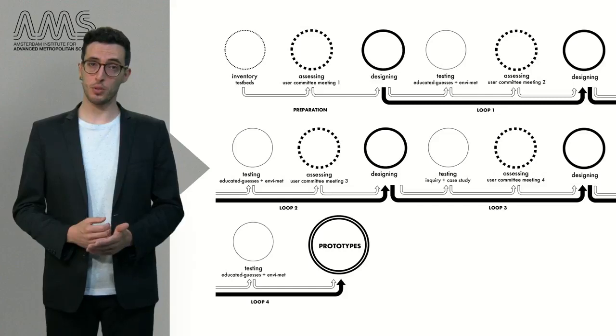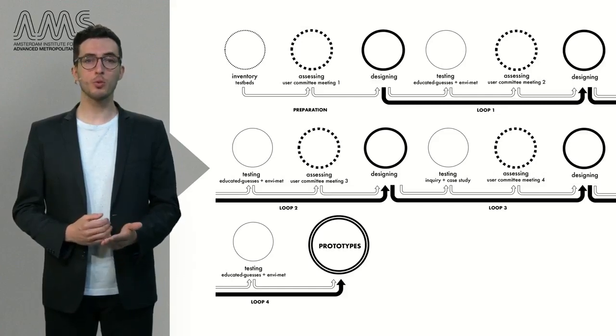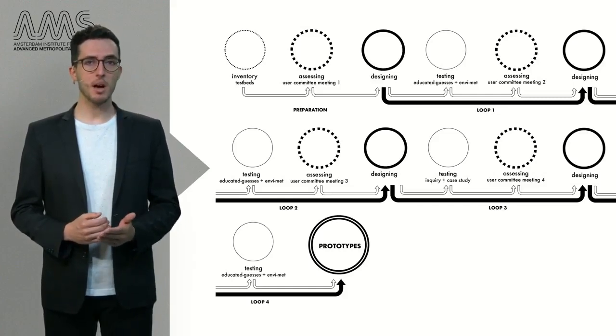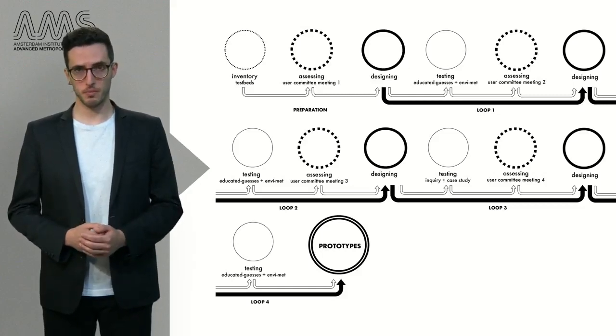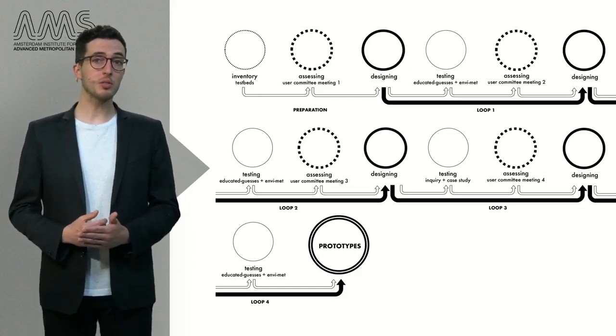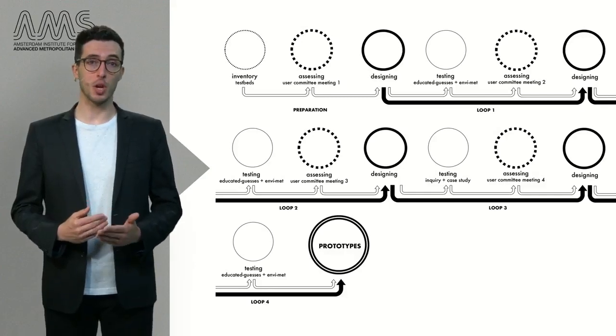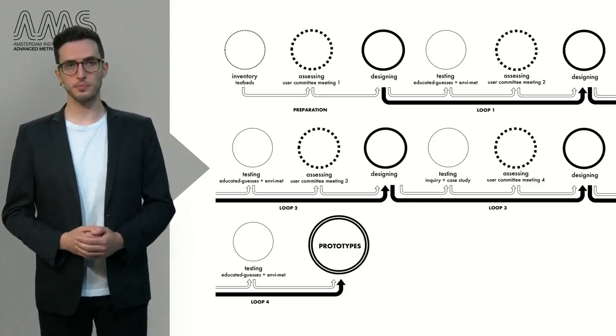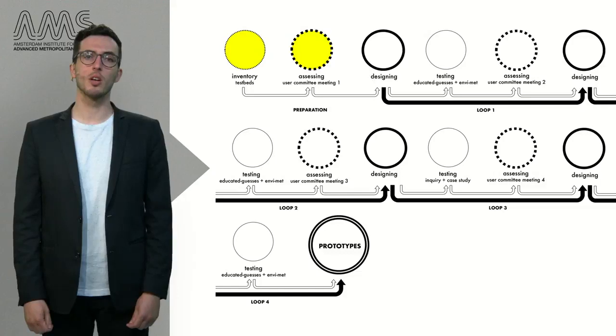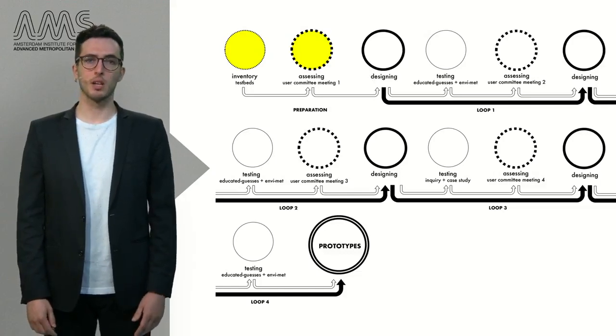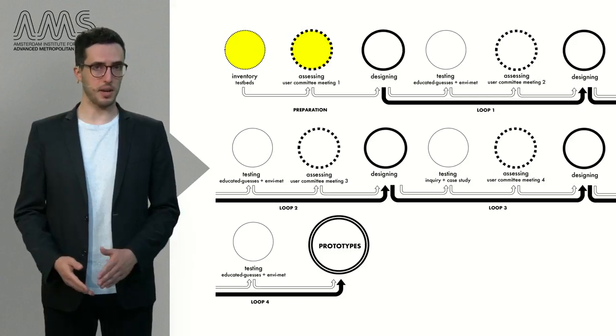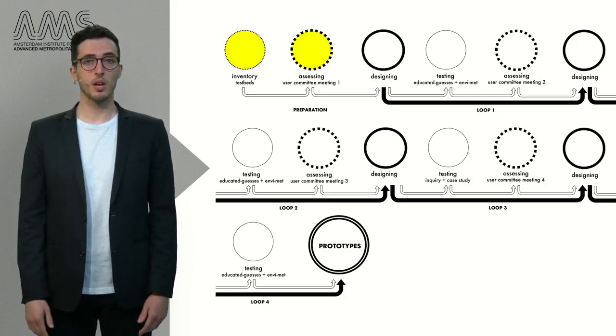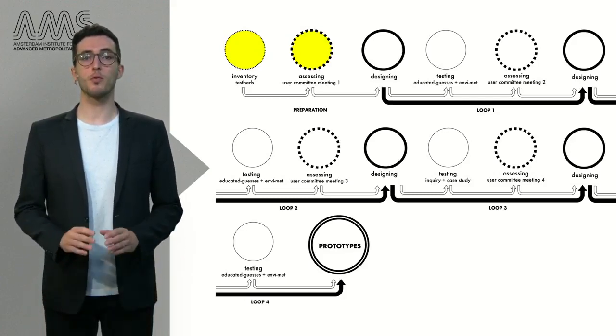We are creating our prototypes through a research through designing method made up of a preparation stage and four iterative loops. I will explain how we use it and ensure true co-creation through the different loops. In the preparation stage, we defined our testbeds. These are common Dutch urban water bodies upon which the prototypes are based. Afterwards, each loop repeats a sequence of three stages.